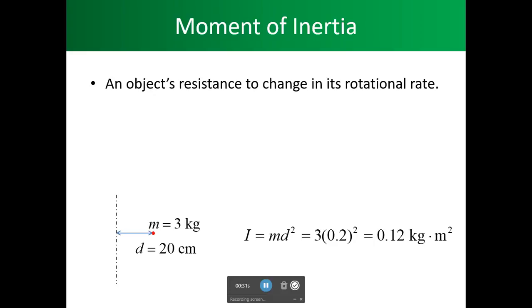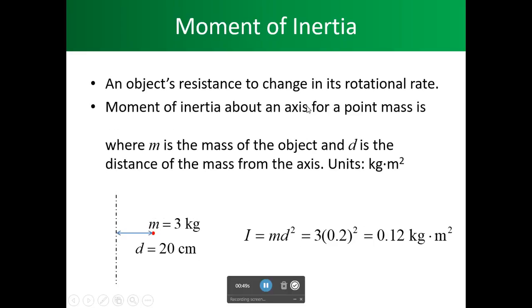Moment of Inertia is an object's resistance to change in its rotational rate. And as you can see here, you can see here we have our distance and we have our application being used. Moment of Inertia about an axis for a point mass is I equals mass times the distance squared. So this is our distance. This is our mass.